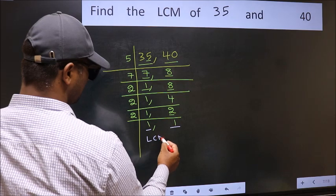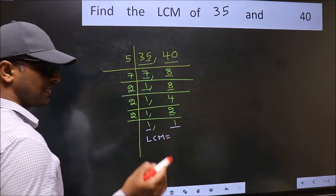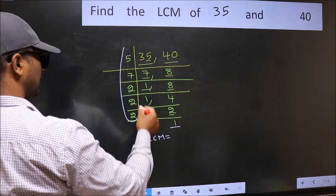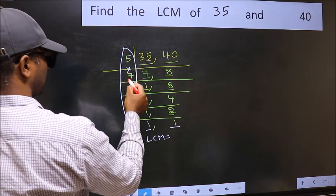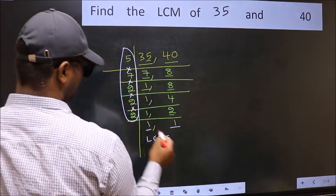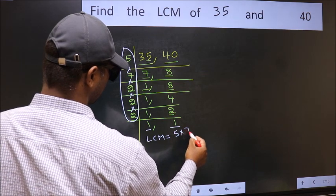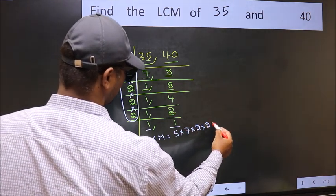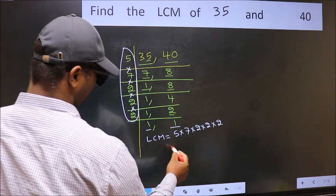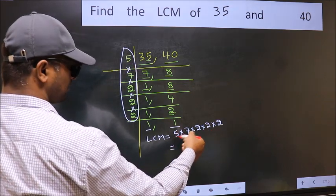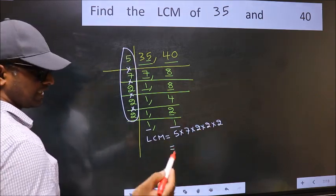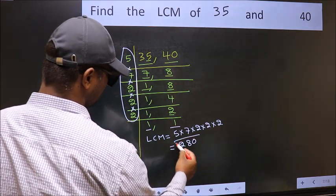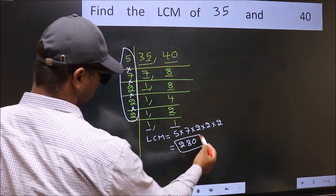So our LCM is the product of these numbers. That is 5 times 7 times 2 times 2 times 2. When we multiply these numbers, we get 280. So 280 is our LCM.